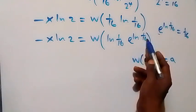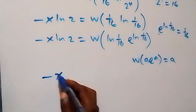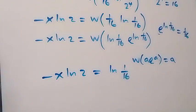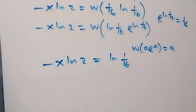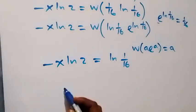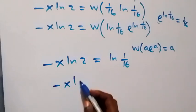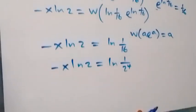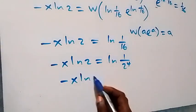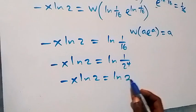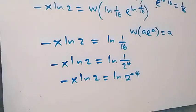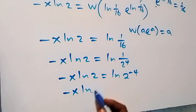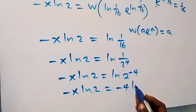The power and the coefficient are already equal, so from Lambert's W function this is minus x·ln2 equals ln(1 over 16). We can write this as ln(1 over 2 raised to power 4), which is simply minus x·ln2 equals ln(2 raised to power minus 4). From the power law of logarithms, the minus 4 comes to the front: minus x·ln2 equals minus 4·ln2.